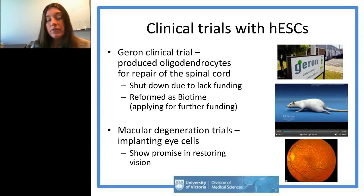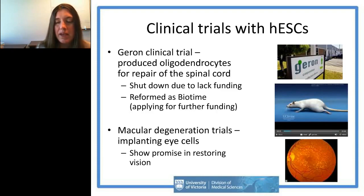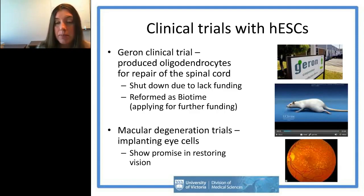I think the nervous system is a great area to work in because this is where these therapies are actually going to clinical trial. Geron took human embryonic stem cells and used them to produce oligodendrocytes for a spinal cord repair trial, actually implanting them into several patients. While they didn't observe adverse effects, they did shut down due to lack of funding. The cell therapy branch was spun off and reformed as BioTime, which is trying to restart this clinical trial.